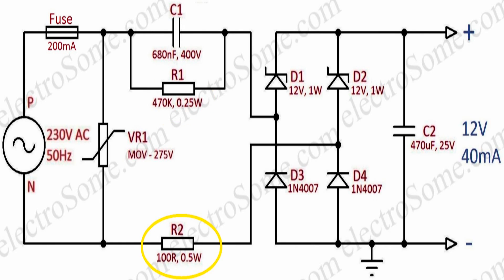The resistor R2 is used to limit the high current that can flow when the circuit is switched on. Diodes D1 through D4 constitute a bridge rectifier which will rectify input power.